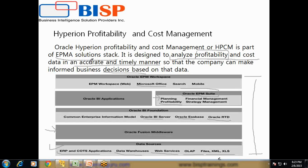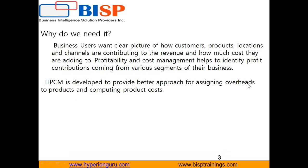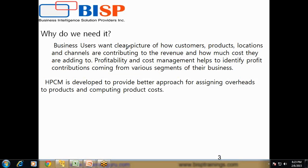We use two terms here: profitability and cost. What exactly does that mean in layman's language, and why do we need it? If I am the owner of a manufacturing company and I manufacture multiple products, I would like to know which product is more profitable and how much cost it adds. What kinds of customers are contributing to revenue? Business users want a clear picture of how customers, products, locations, and different channels are contributing to revenue and adding cost. Profitability and Cost Management helps identify this — finding direct and indirect cost with respect to different products and services. HPCM is specially designed to provide a better approach for assigning overhead costs with respect to your products or services.